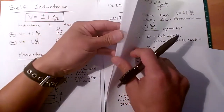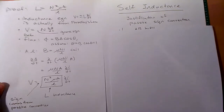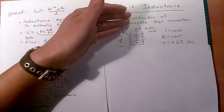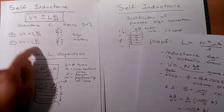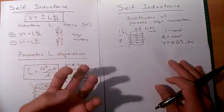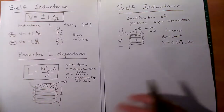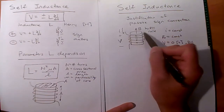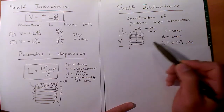Now let's look at the sign, which comes from the same passive sign convention analysis. The plus or minus — let's explore where it comes from. It comes from Lenz's law and Faraday's law analysis. Let's imagine we have an inductor with current flowing through it. We can measure this V — the V is just measured with a multimeter, with black and red leads. It's not a source, it's just a measurement.